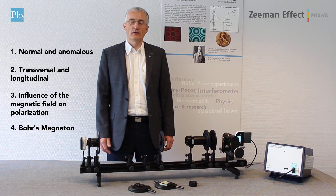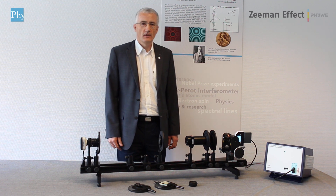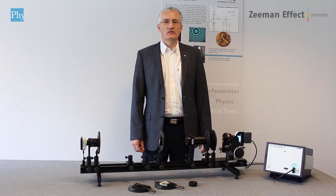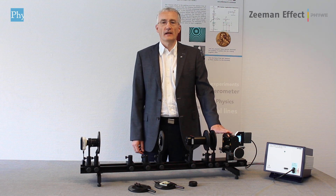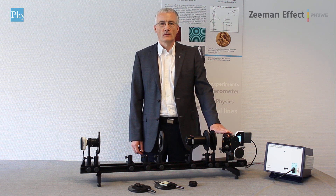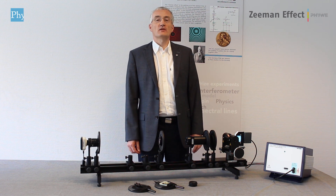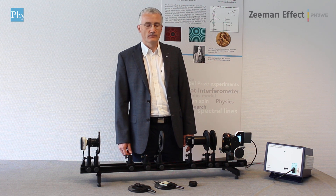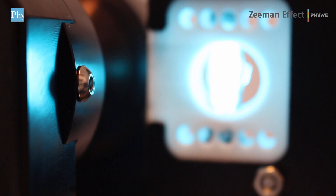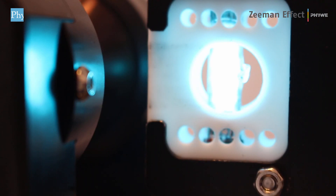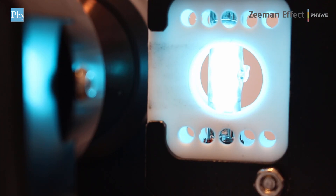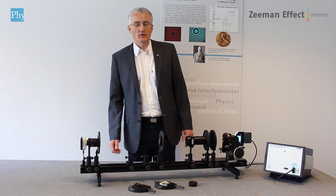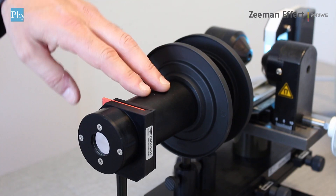Now let us have a look at the components of the setup. Let us start with the magnet. For splitting up the energy states, you need a very strong magnet. Then, for making the energy states visible, you need a vapor discharge lamp, which is here. We use a multipurpose cadmium vapor discharge lamp. The core of the optical system is a Fabry-Perot interferometer.